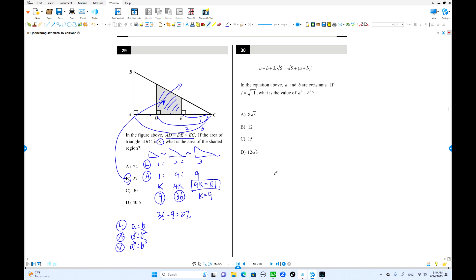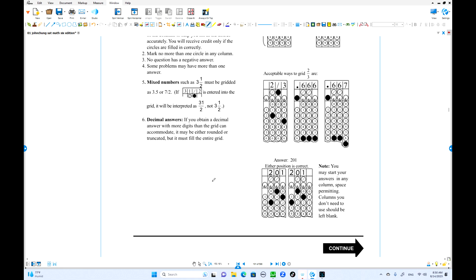Problem 30: Complex number equation. We need to find a squared minus b squared. Real equals real and imaginary equals imaginary. So a minus b equals square root 5, and a plus b equals 3 root 5. Now a squared minus b squared equals (a + b)(a - b). That's 3 root 5 times root 5, which equals 3 times 5 equals 15.